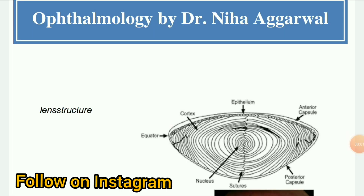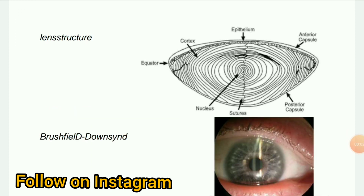The first image is the structure and labeling of the lens. Components include: epithelium, cortex, equators, nucleus, sutures, posterior capsule, and anterior capsule.